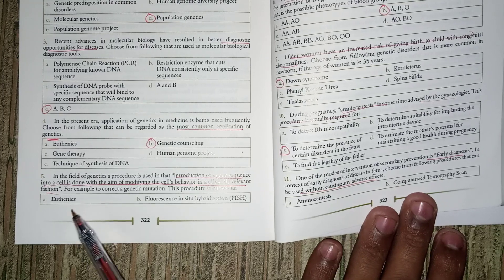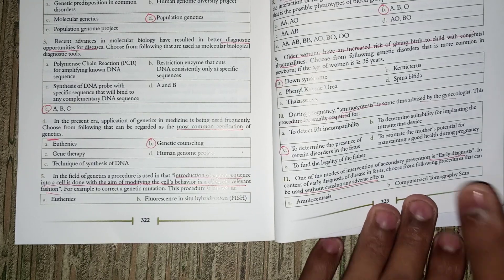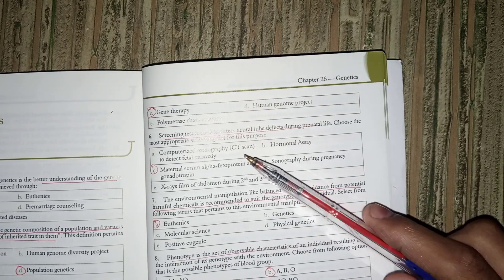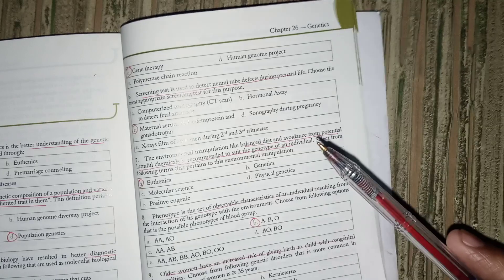Next is the introduction of gene sequences into cells to modify behavior. This is the definition of gene therapy. Screening tests are used to detect neural tube defects. We can measure maternal serum and amniotic fluid alpha-fetoprotein and gonadotropin levels.